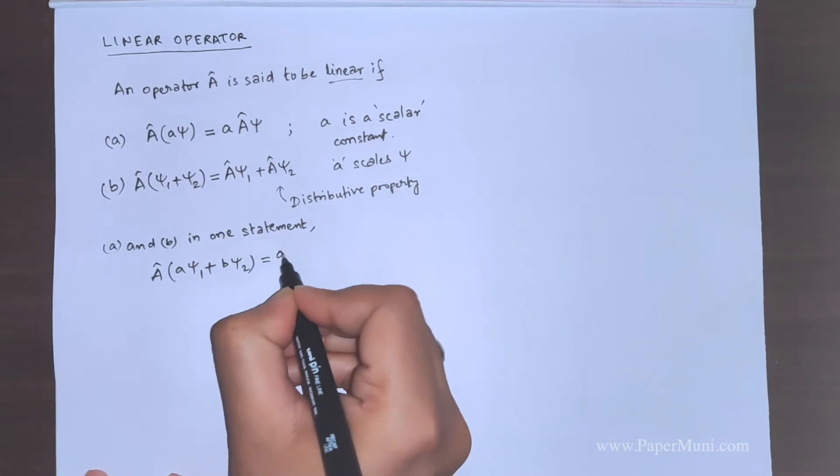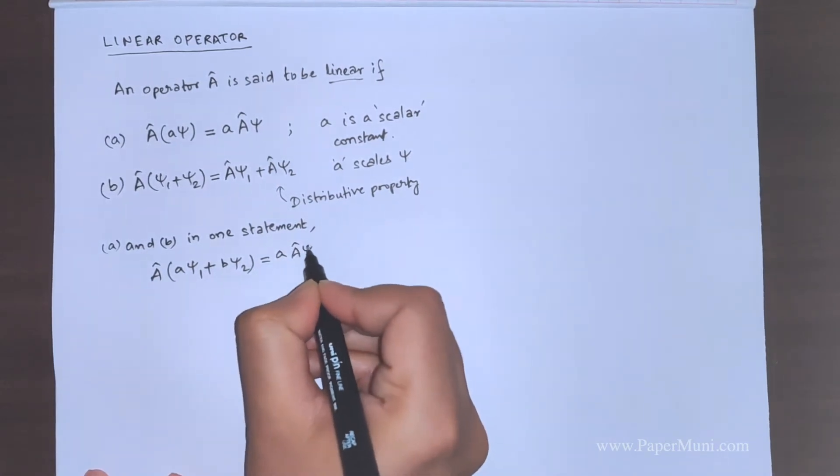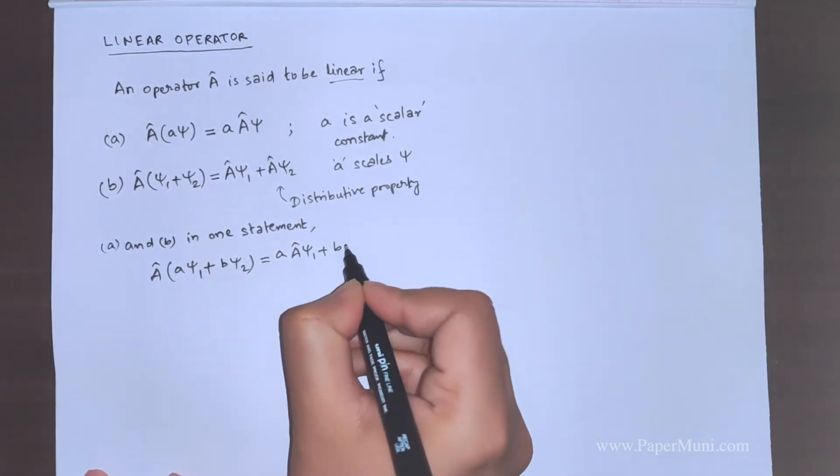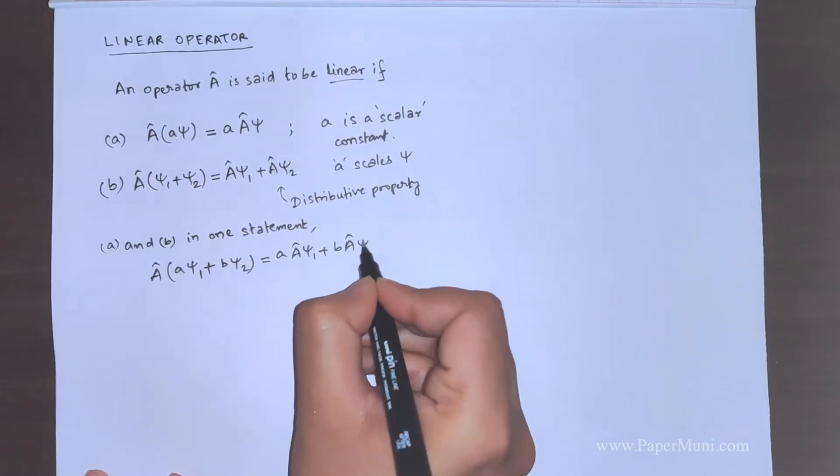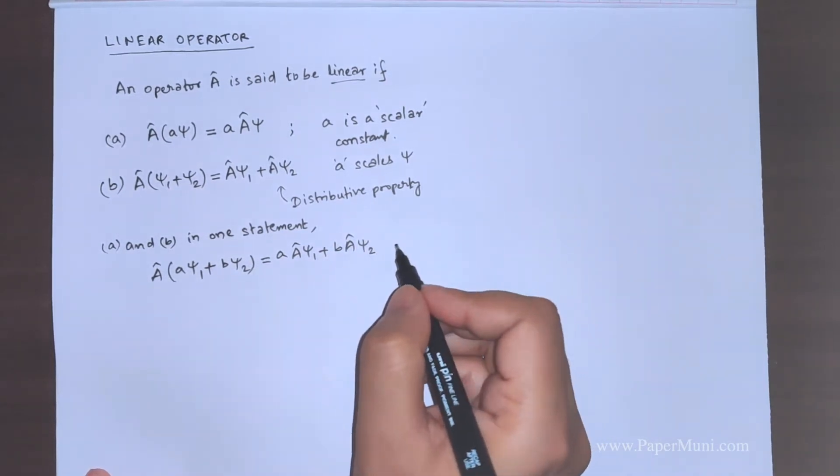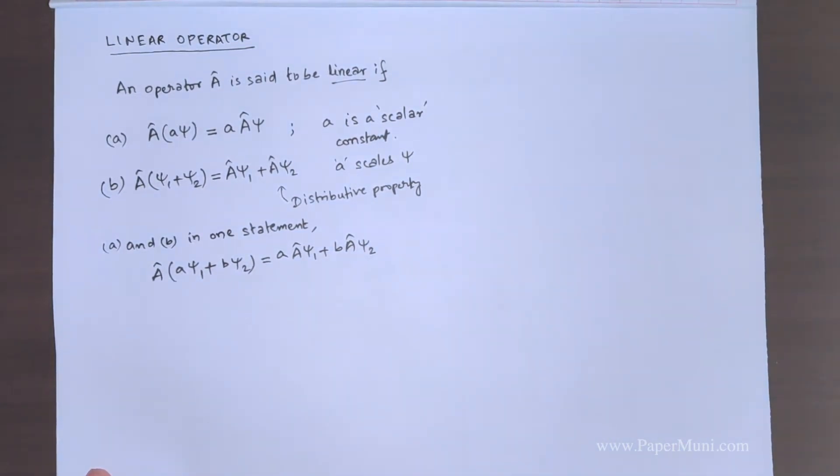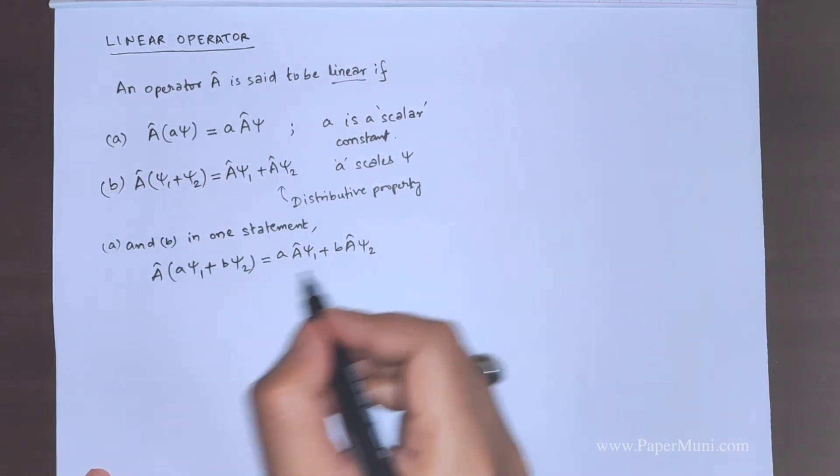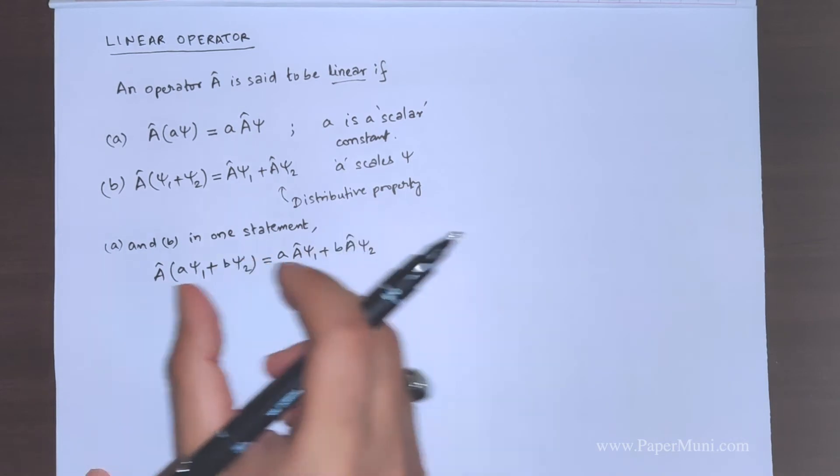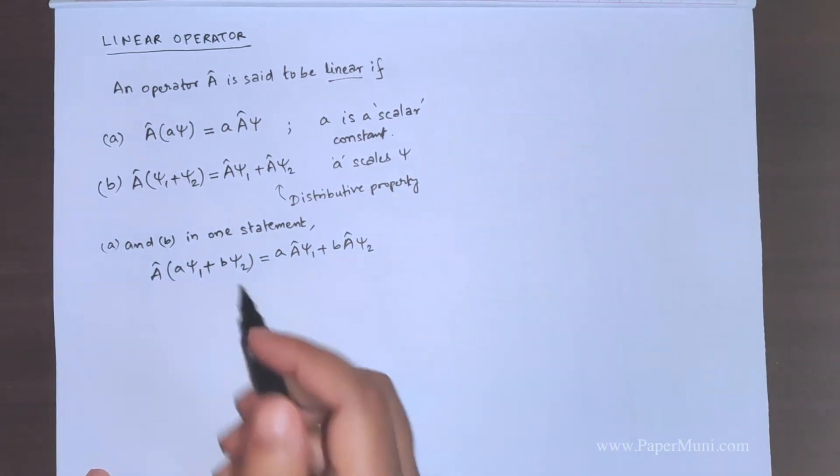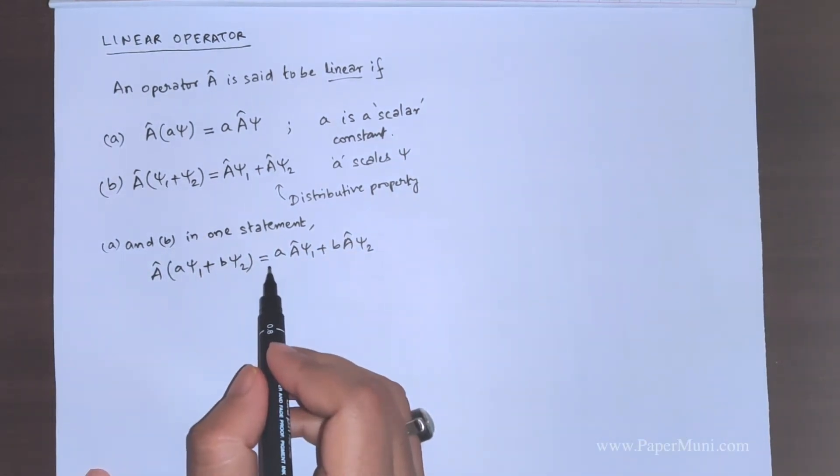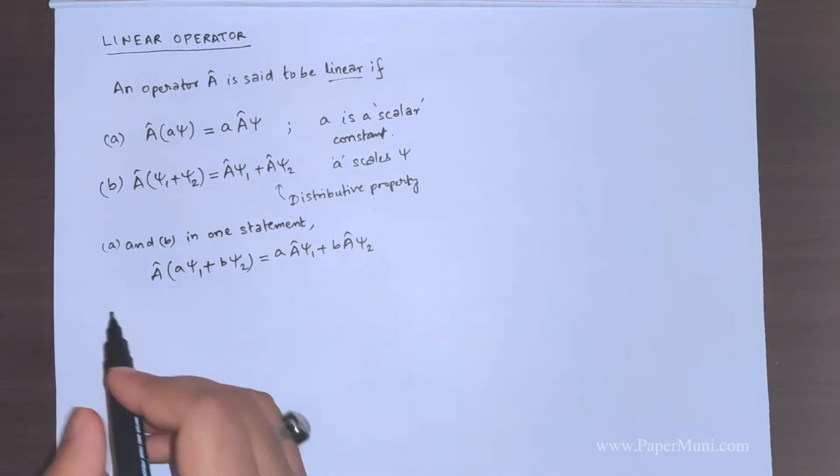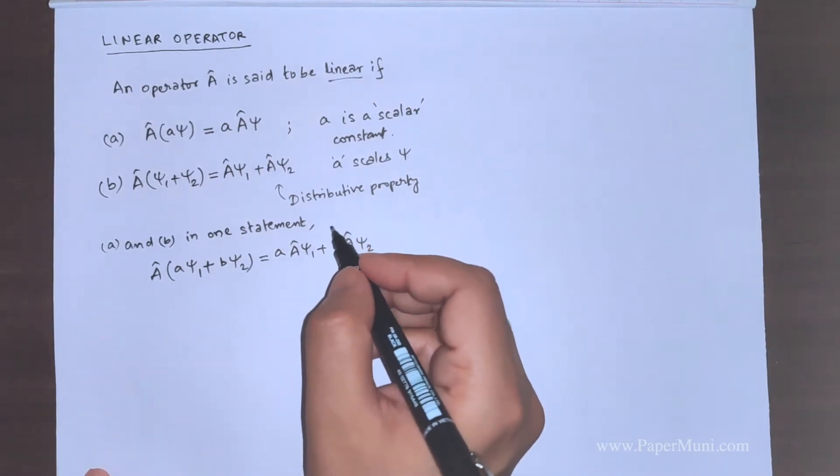The statement is A operating on some A psi 1, B psi 2. What happens is after the operation is done, it should look like this. We will take an example to see what is happening here. Sometimes it is not obvious from this statement. If this side is equal to this side, then the operator is said to be linear.